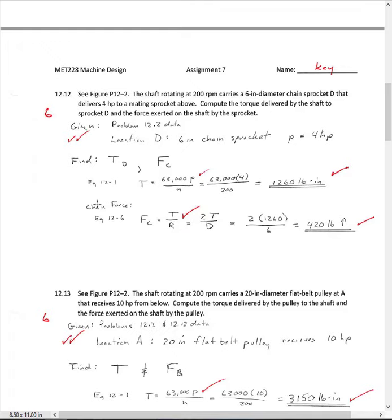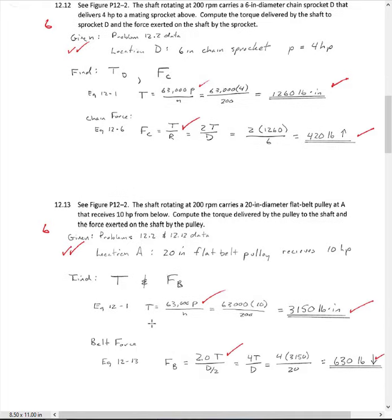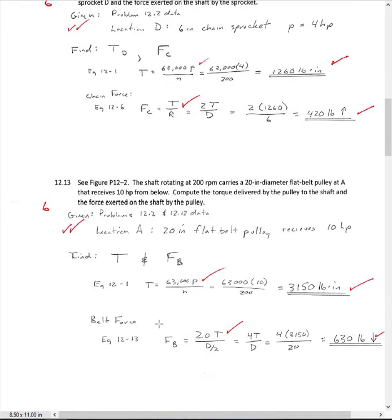And then we had an equation I gave you from 12-6. That was the chain force. And when I go through this, chain force is now going to be 420 pounds. And again, that's going to be reacting upwards on the shaft. Okay, so again, here's the third part of this problem.